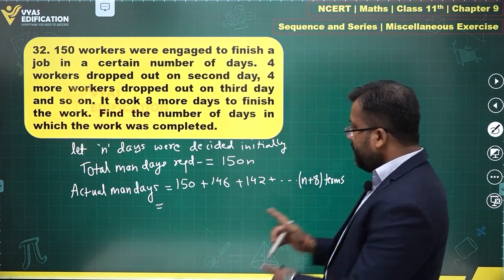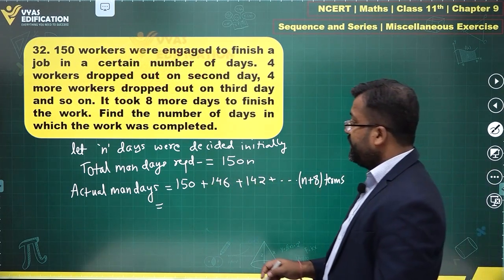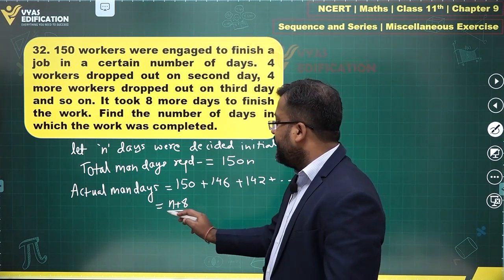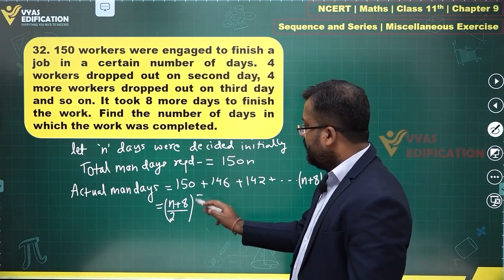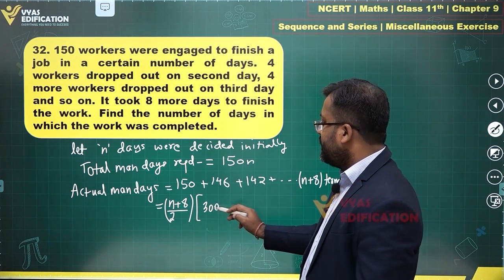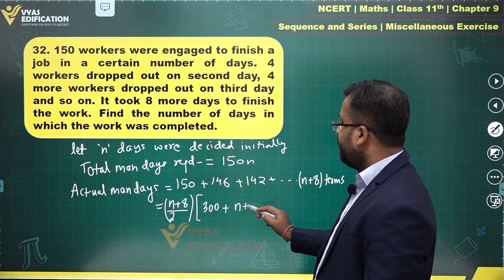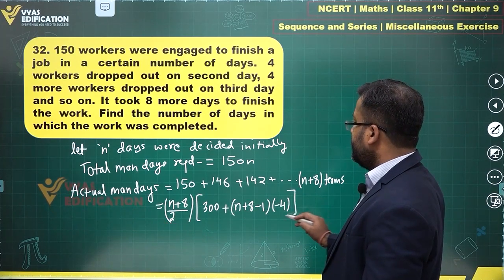What does this become? So you know the number of terms. And do you see that this is an arithmetic progression having common difference minus 4. So number of terms is n plus 8 upon 2, 2 into this, which is 300. Plus number of terms minus 1, which is n plus 8 minus 1, times common difference, which is minus 4. This is what you get.